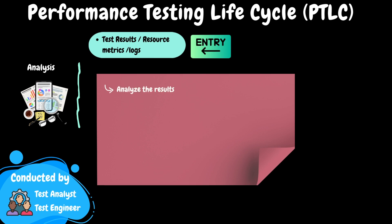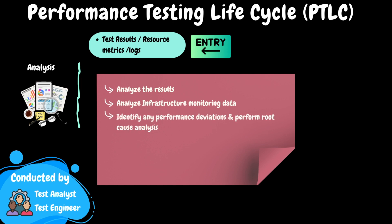We must verify if there are any deviations in the performance test results. In the event of deviations, a root cause analysis may be required. For instance, if the client anticipates a 2-second response time for a transaction but the test reveals a 10-second response time, we should identify the root cause for the deviation. This investigation typically involves the use of logs and application monitoring tools. In the event that we identify any issues, these problems will be reported to the development team for resolution.